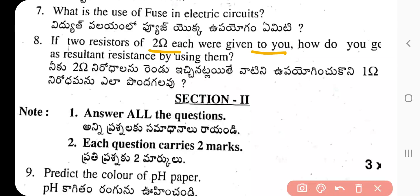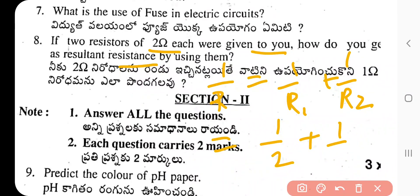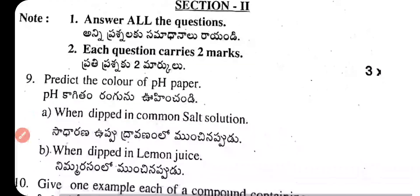Question 8: If two resistors of 2 ohms each are given, how do you get a resultant resistance of 1 ohm? Use a parallel combination. The formula is: 1/R = 1/R₁ + 1/R₂ = 1/2 + 1/2 = 1. Therefore, the resultant resistance is 1 ohm.